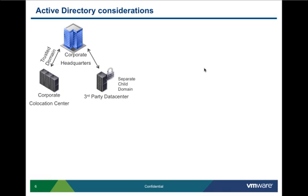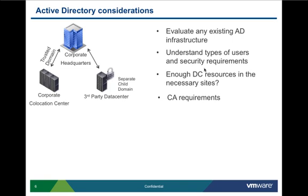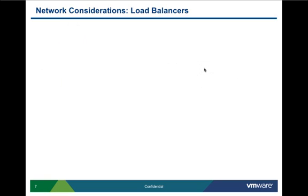Let's dive into Active Directory considerations. In this design we have three distinct sites: the CARP headquarters, the CARP co-location center, and the third-party data center. The CARP environment and co-location center can be in the same domain, but due to increased security requirements it is recommended to create a child domain for the third-party data center. Also, since we'll be introducing new elements into the AD, ensure the domain controller has enough resources to cater to the increased demand. Make sure CA requirements are documented, and determine whether the existing CA can be used or if a new one must be created.